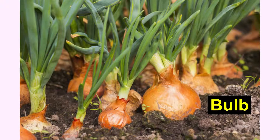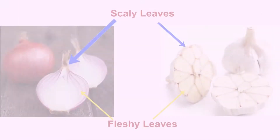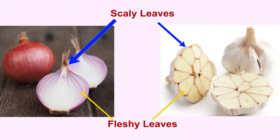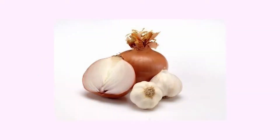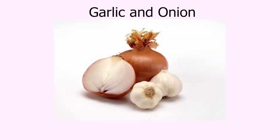Bulb is a condensed stem which is disc-like and stores food in the fleshy leaves. The bulb has two types of leaves: fleshy leaves and scaly leaves. The upper part of the stem has a terminal bud and it is covered by many scaly leaves. The inner fleshy leaves store food. Garlic and onion are examples of bulb.